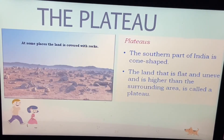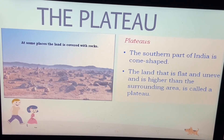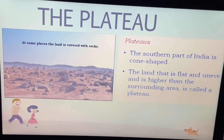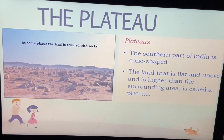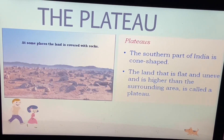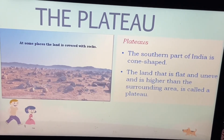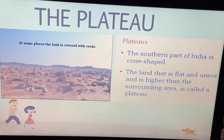Now we will talk about the next physical division of India — that's the plateau. At some places the land is covered with rocks, and this land is called a plateau. The land is flat and uneven and is higher than the surrounding area. That is called a plateau. The southernmost part of India is a plateau and it looks cone-shaped.